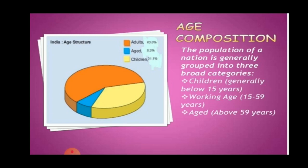Regarding age structure, the total population of the nation comprises three age groups: children below 14 years, adults from 15 to 59 years, and senior citizens above 59 years. As per the 2001 census, 35 to 40 percent of the total population is below 18 years, whereas 7 to 10 percent are senior citizens and the rest are adults.